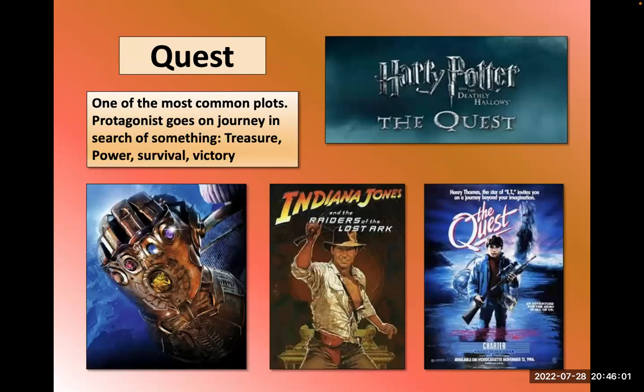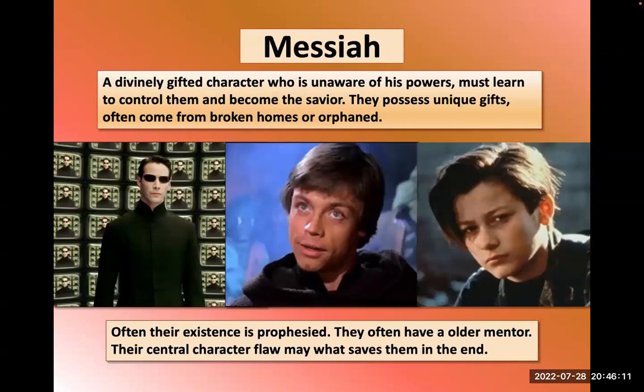The quest is where characters are seeking something — power, survival, victory — as in Avengers or Indiana Jones movies. The messiah story features some sort of prophesied young person, usually from a broken home or an orphan, who possesses unique gifts but doesn't realize them yet. They get guidance from an older mentor, may have a character flaw that saves them in the end. We see this film after film — for example, John Connor from Terminator.